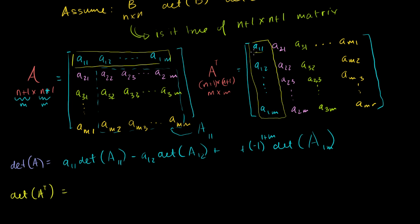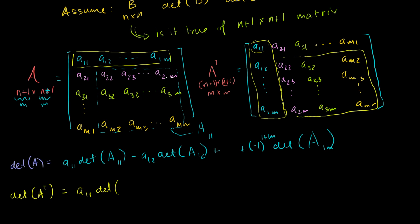So the determinant of A transpose is going to be equal to: first term A₁₁ times the determinant of its submatrix — you cross out its row and its column and you're left with a certain block. Now an interesting question is how does that submatrix of A transpose relate to the submatrix of A? If you look carefully, the row from A₂₂ to A₂ₘ has now become a column from A₂₂ to A₂ₘ, and so on. So the submatrix of A transpose is equal to the transpose of A₁₁'s submatrix — we call it A sub 1,1 transpose.